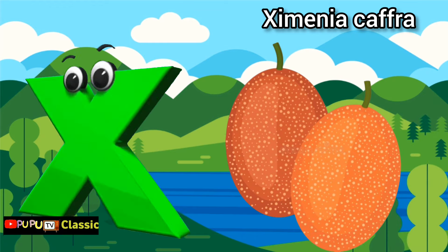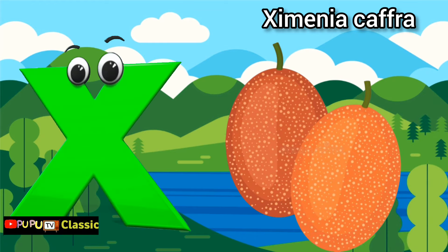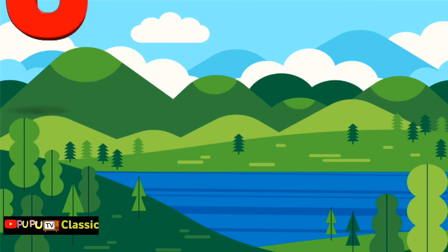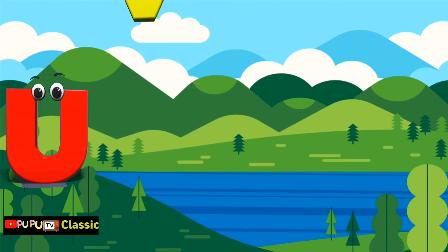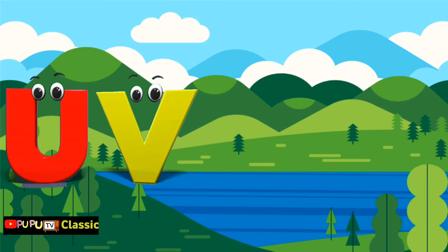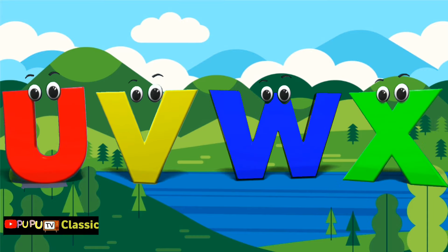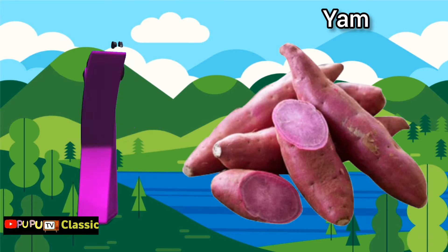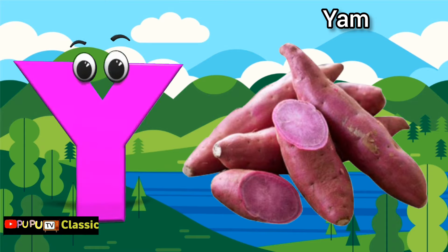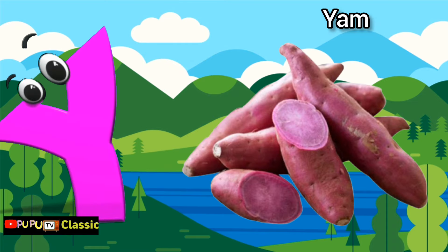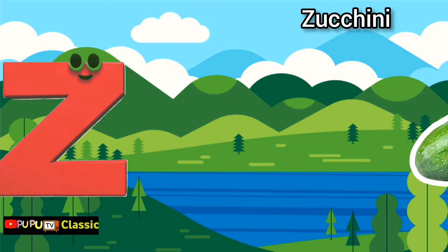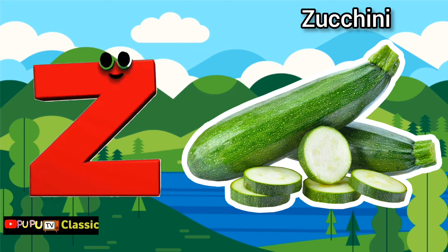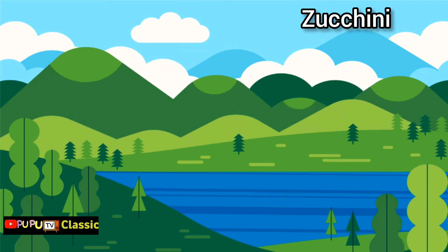X is for xymeniacafra, xymeniacafra. Y is for yam, yam. Z is for zucchini, zucchini.